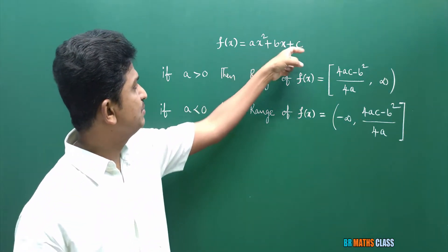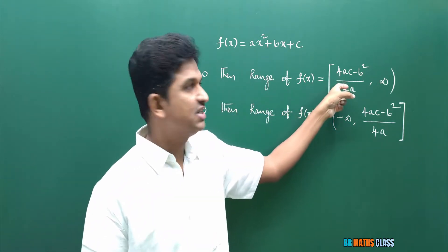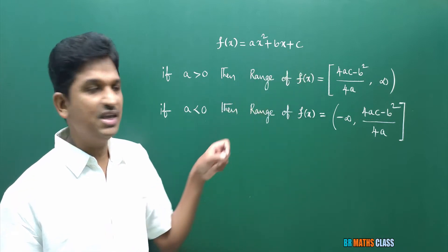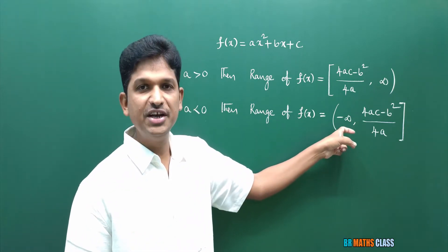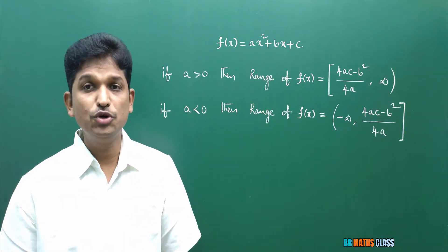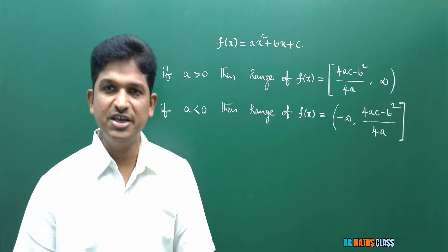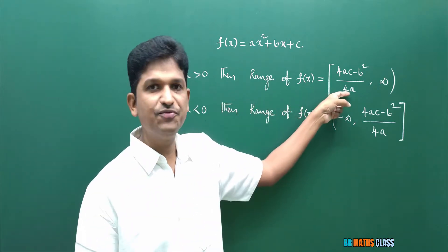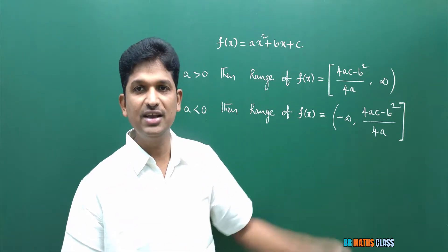First case: in AX square plus BX plus C, if A is greater than 0, then the range of F of X is the closed interval [4AC minus B square divided by 4A, infinity). If A is less than 0, then the range of that function is the interval (-infinity, 4AC minus B square divided by 4A]. To calculate the range, first observe whether A is greater than 0 or less than 0, and apply the corresponding formula.